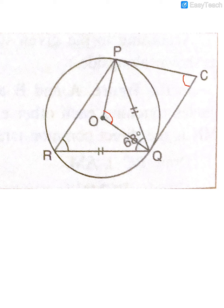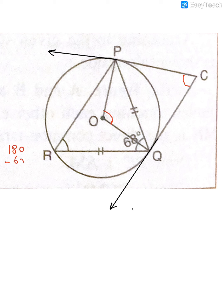Let's start. I'll extend these tangents because otherwise it's difficult to understand how they go. Even in the exam, if it is difficult to understand, always extend the tangents — it makes the figure easier to imagine. Now let's find the angles. The two equal sides are given, so the base angles are equal. The base angle = (180 − 68) ÷ 2 = 56°.